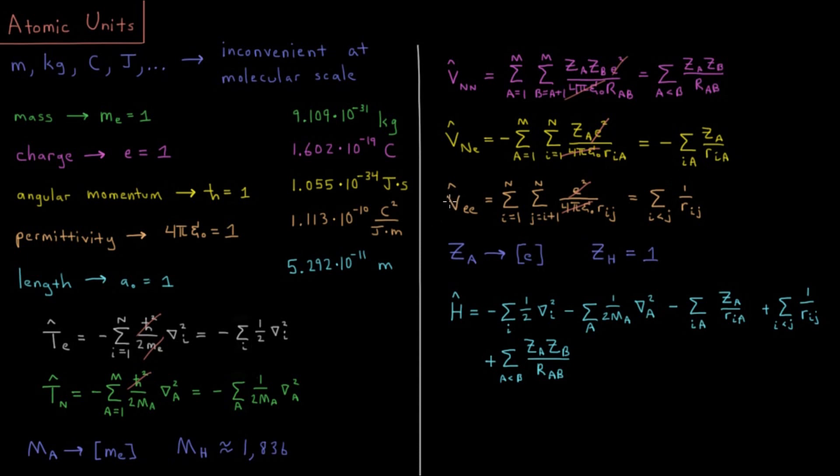Then finally, our last term, the electron-electron repulsion. It's going to be the pairwise sum over all i and j electron pairs. e squared goes away, 4 pi epsilon naught goes away. And we're left with the simplest term overall, sum i less than j, 1 over rij.